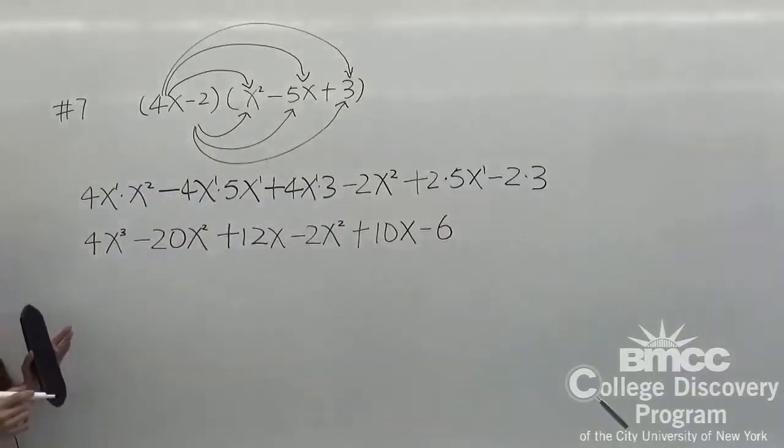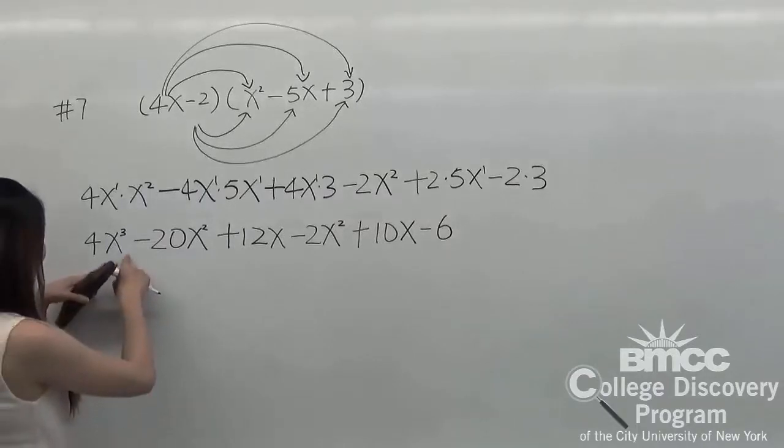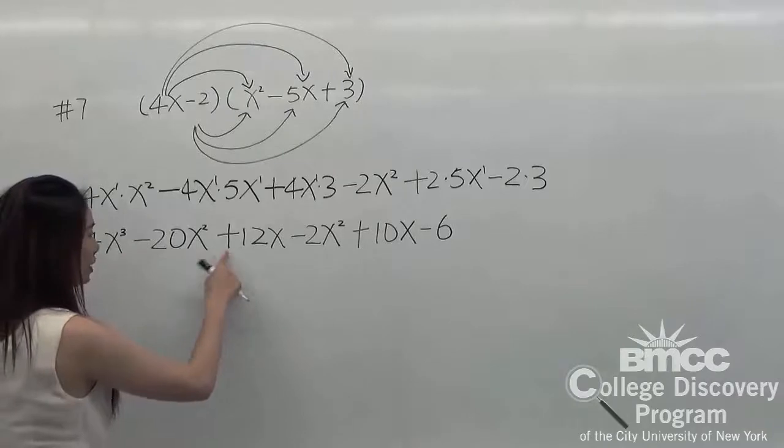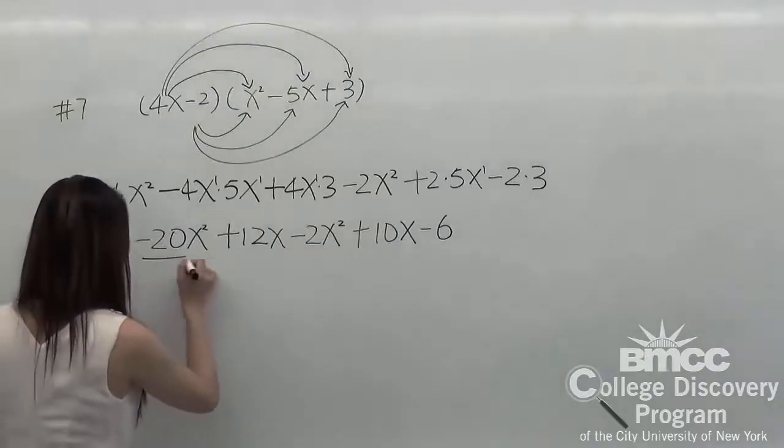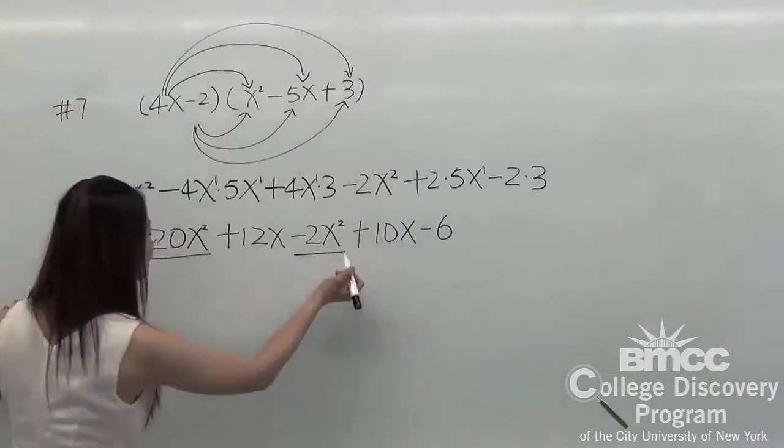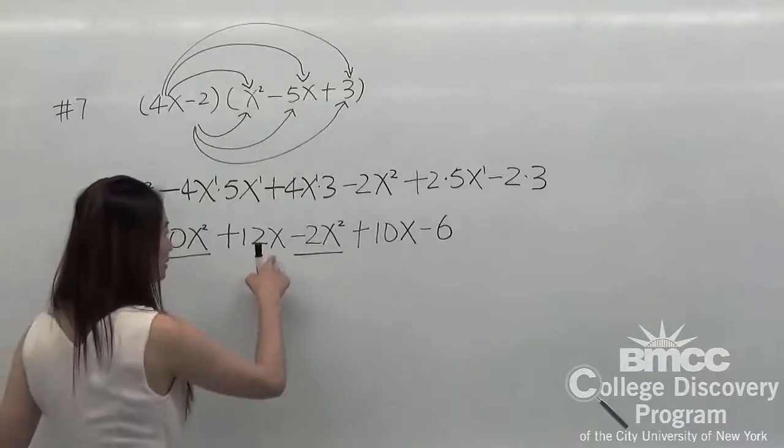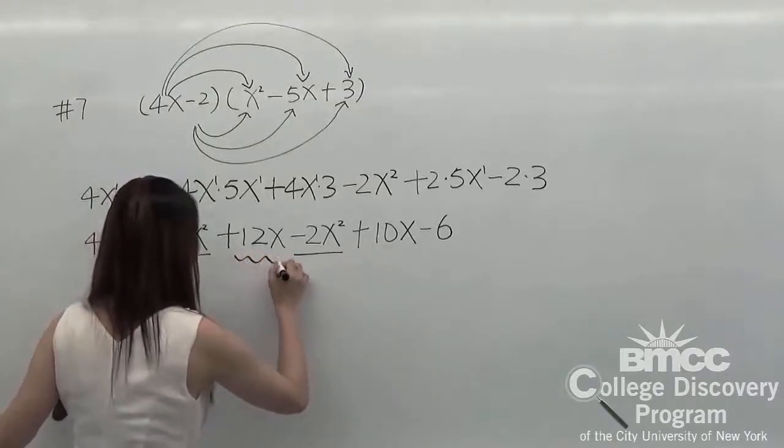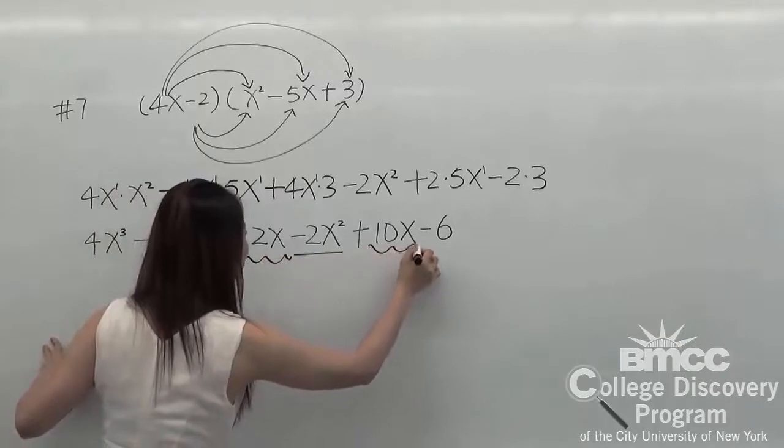So the next step, we need to combine the terms. We cannot combine the x cubed because it has only 1. X squared, we have 2, so we'll combine these two terms. X to the 1, we have 2 here, so we can combine these two.